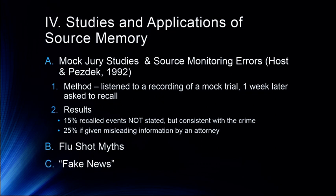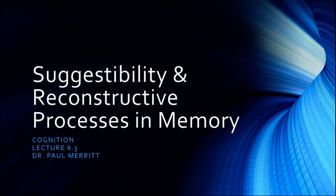That's a particularly problematic issue in this era of fake news — trying to remember where something came from and whether it was a credible source. Even if you're trying to dispel fake news, people may later remember the fake news and believe it came from a real news source. That's a huge problem we need to figure out how to fix. This gets us to the end of this quick introduction to source memory. We'll pick up suggestibility and reconstructive processes in memory in our next lecture.